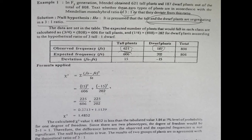The expected number of 606 tall plants is calculated as: 3 divided by 4, multiplied by the total of 808 plants — so 3/4 of 808 gives 606 tall plants. Similarly, 202 are dwarf plants. We then put these values in a table with observed frequency and expected frequency. Tall plants: 621 observed, 606 expected. Dwarf plants: 187 observed, 202 expected. Total is 808.